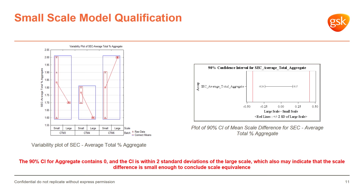In the small-scale model qualification, the small-scale model had some variabilities compared to the large scale, but this was within the acceptable variability and within two standard deviations of the large scale. The 90% confidence interval contains zero, and hence the difference between the small and large scale is small enough to conclude scale equivalency.